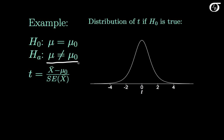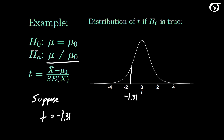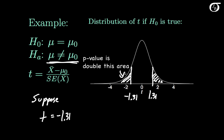Suppose instead we had a two-sided alternative hypothesis, and we get a test statistic of minus 1.31. We are interested in the probability of getting this value or something even more extreme, so this left-tail area is of interest. But we would have thought it just as much evidence against the null had we gotten a value of 1.31 on the other side, so that area is also of interest. The p-value for this two-sided alternative is the area in the tail beyond the test statistic, doubled.